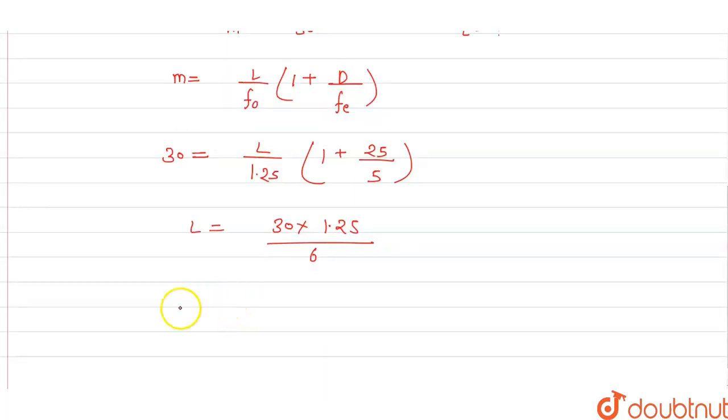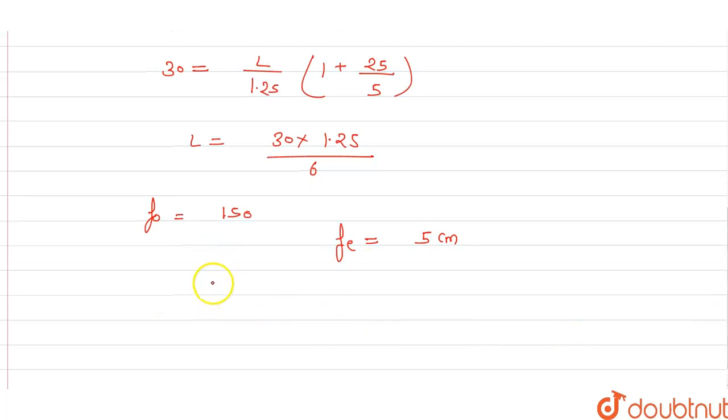Now what will happen? Given f_o in the other case is 150 cm, and f_e value is given 5 cm. Now see, final image is at infinity. When final image is at infinity...